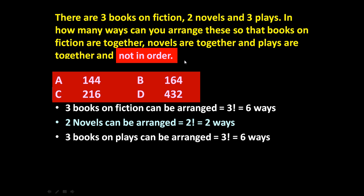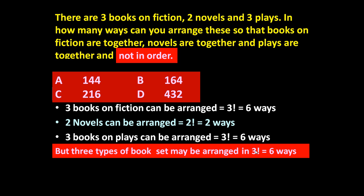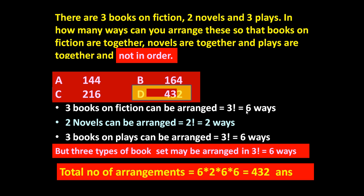Now what is the change here? These sets of books can be placed in any order — there is no specific order. First may be fiction, first may be novel, or first may be play. So these three sets of books may also be arranged in factorial three, equal to six ways. Therefore, the total number of arrangements will be six into two into six into six, which is equal to 432.